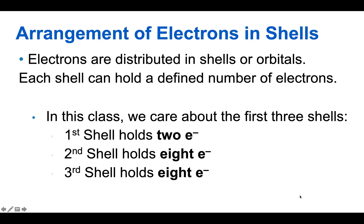An atom is made of protons, electrons, and neutrons. The protons and neutrons are in the nucleus, and electrons are hovering around the nucleus.